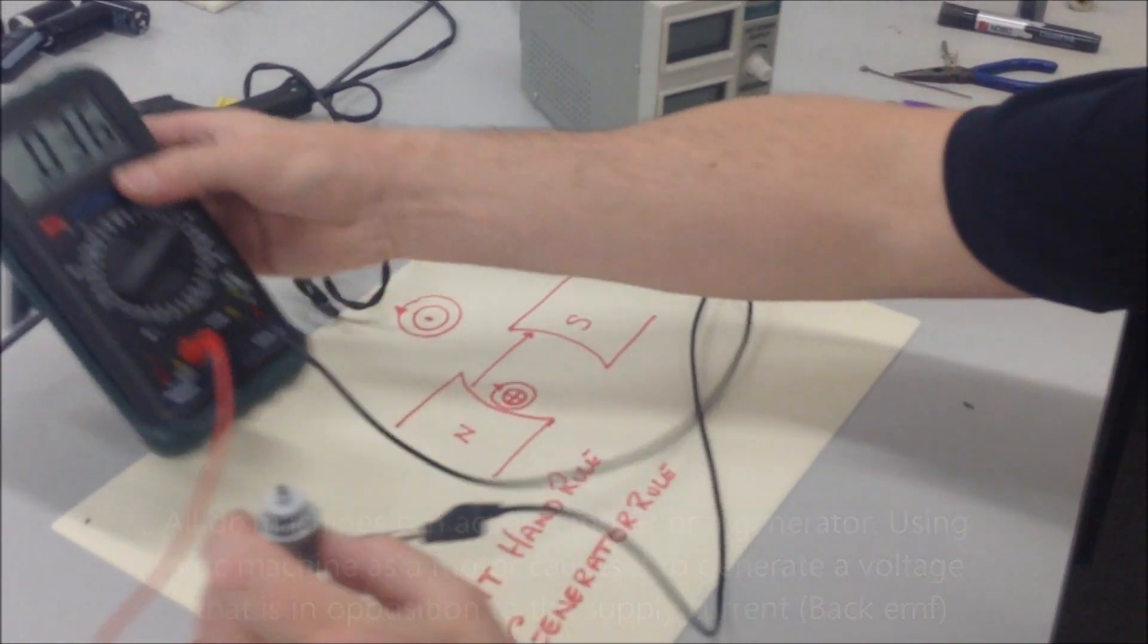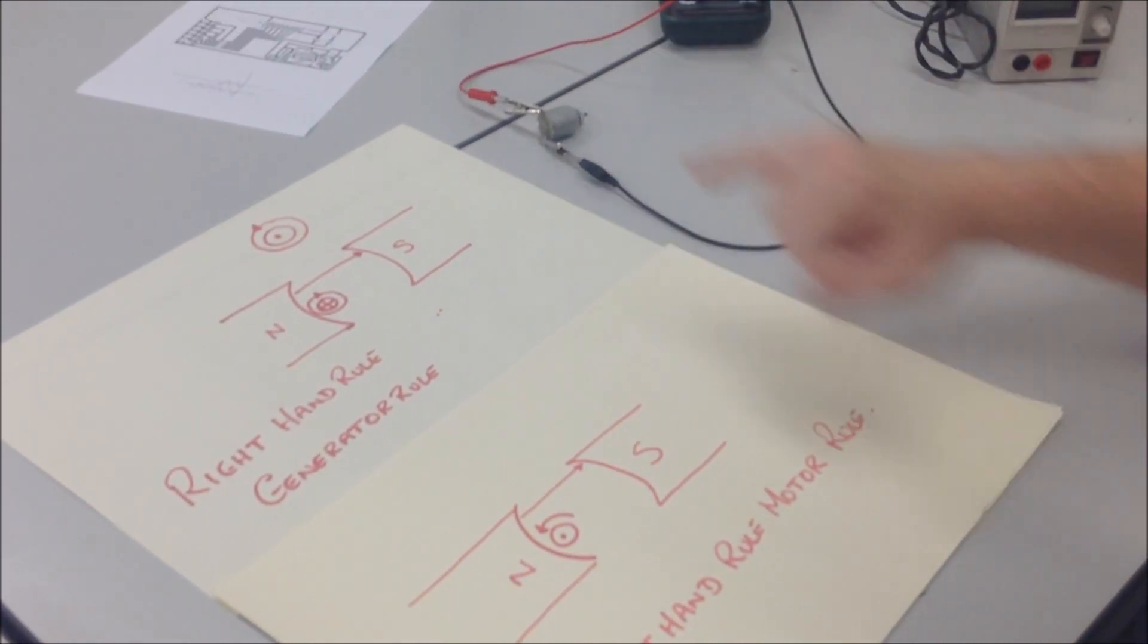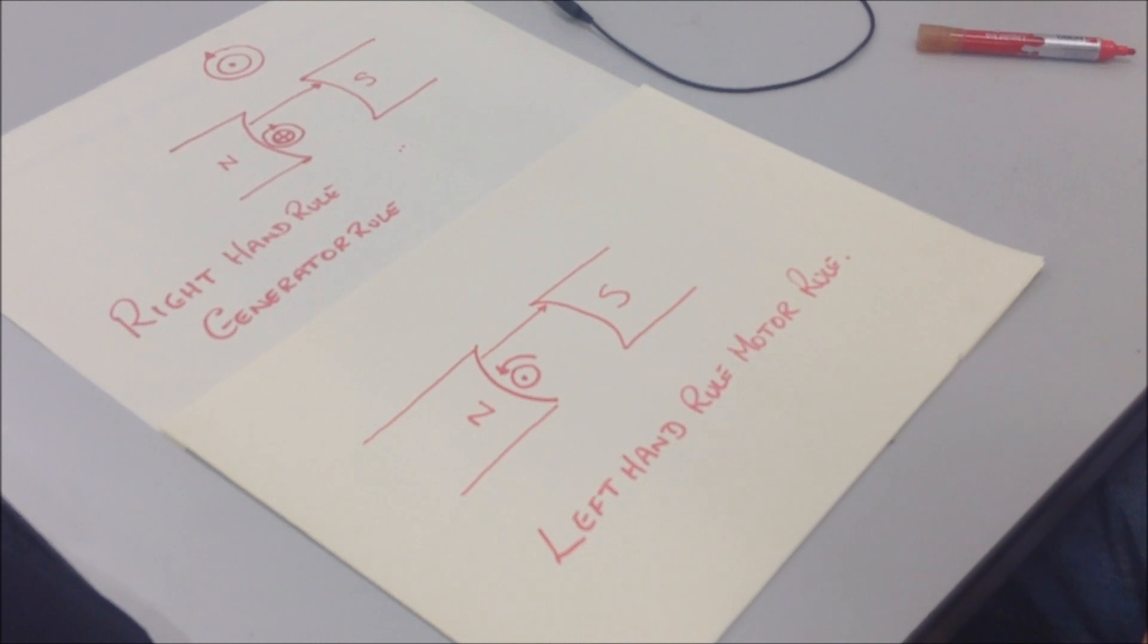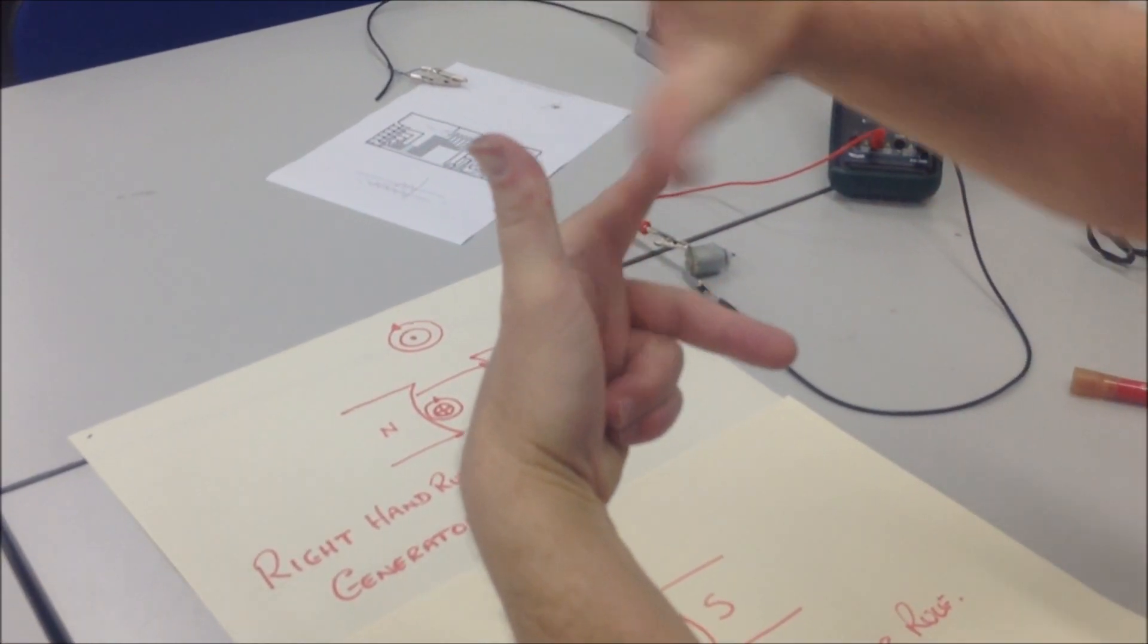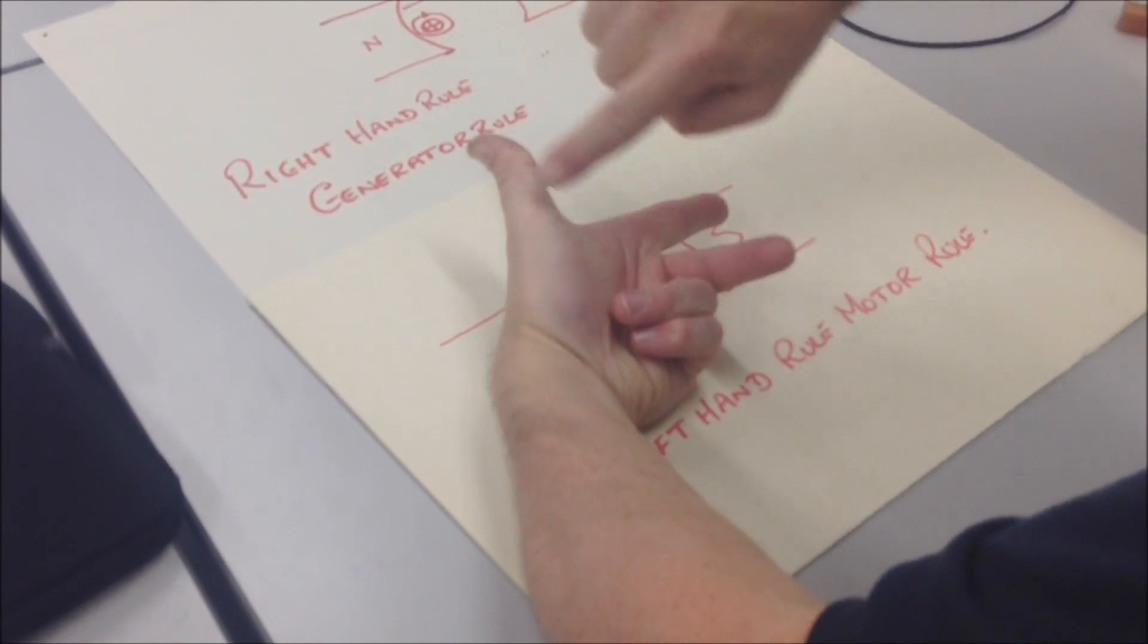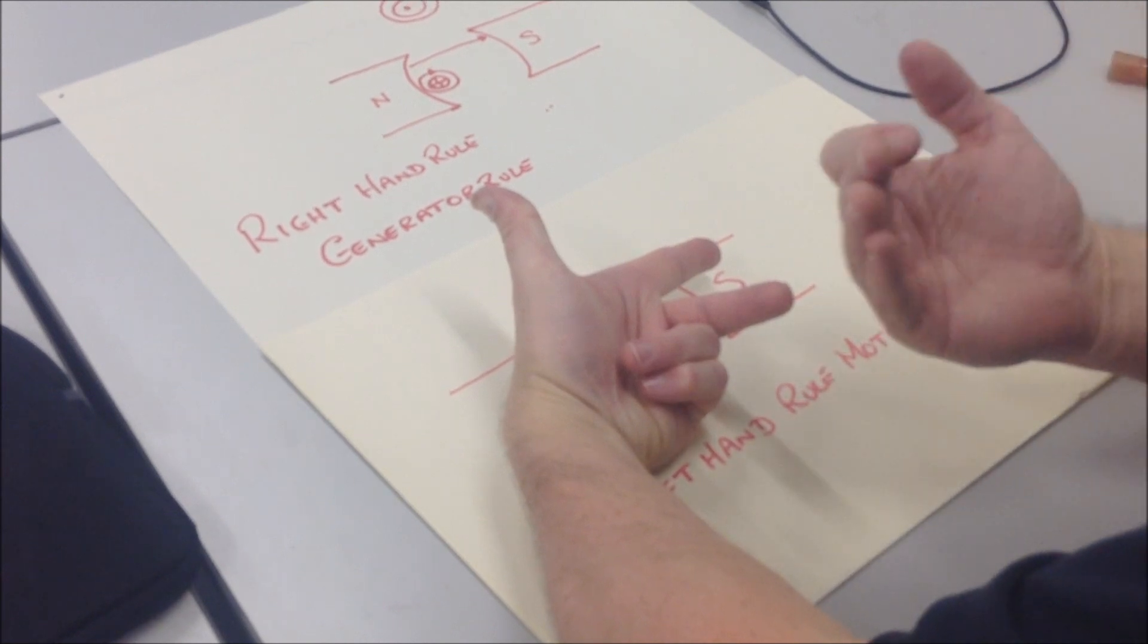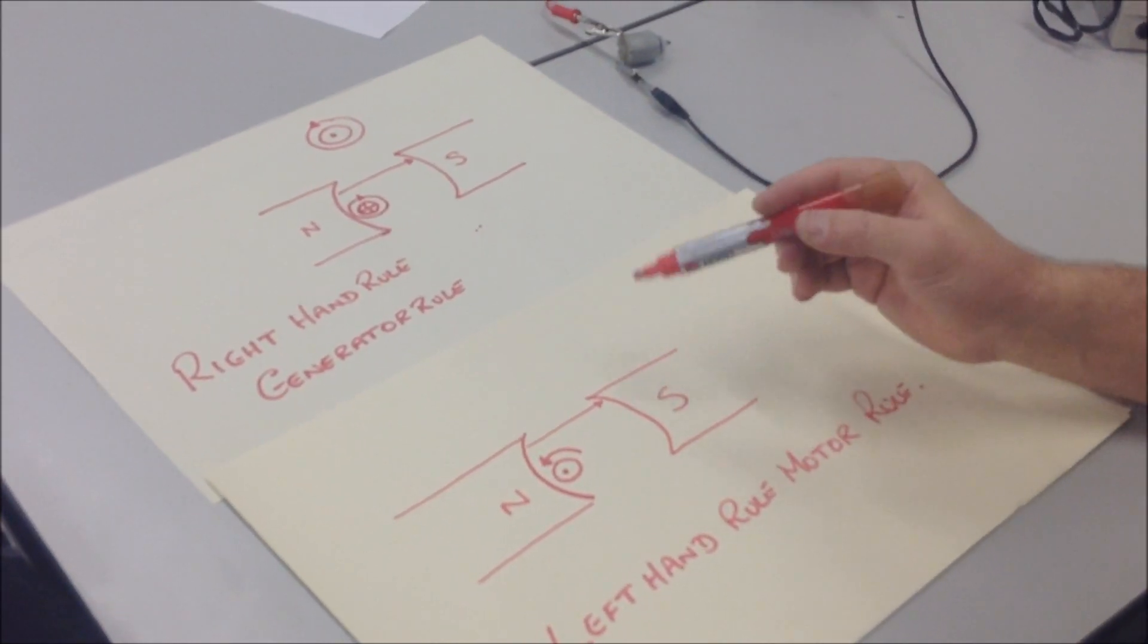And that's down to something called... Okay, so we've looked at the right-hand rule, which is a generator rule. And we've just looked at the motor acting as a motor. And there's a different rule, the left-hand rule for the motor. And the left-hand rule, same thing, we have the field, we have the motion, and we have the current. And we notice for the same motion as before, so moving upwards as we did before, we get a current that goes in the opposite direction, travels towards us. This is because of something called Lenz's Law.